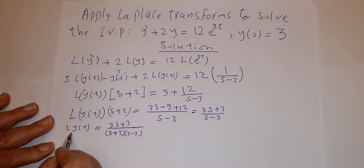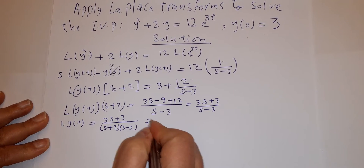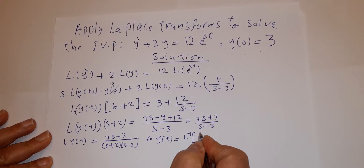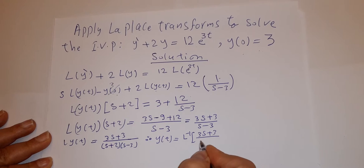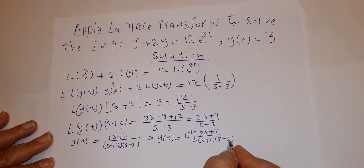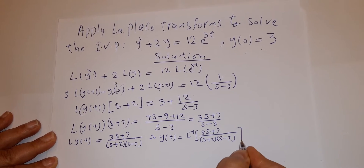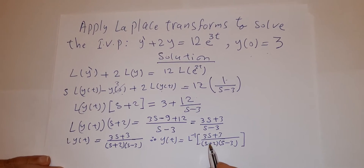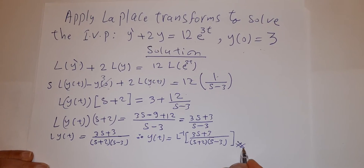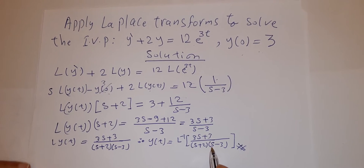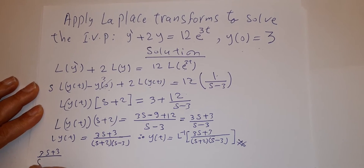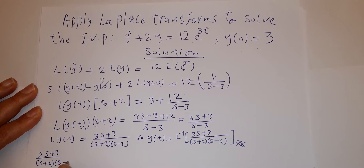To find y(t), we apply the inverse Laplace operator. So y(t) = L⁻¹{(3s + 3) / [(s + 2)(s − 3)]}. Now we need to use partial fractions to decompose this expression: (3s + 3) / [(s + 2)(s − 3)].